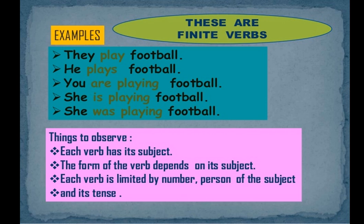Now let's look at some examples: they play football, he plays football, you are playing football, she is playing football, she was playing — in all these sentences the tense is shown. Each verb has its own subject, and the form of the verb depends on its subject. Each verb is also limited by the number and person of its subject and its tense.